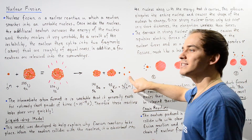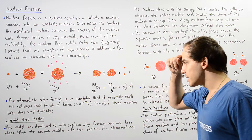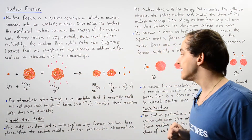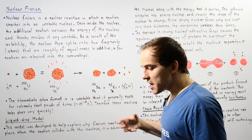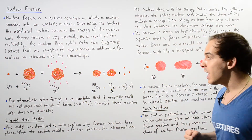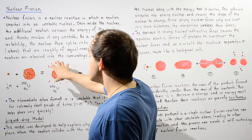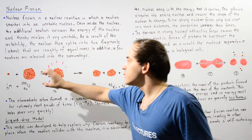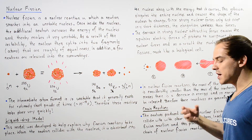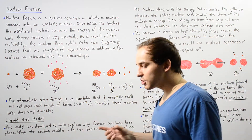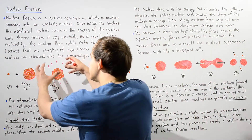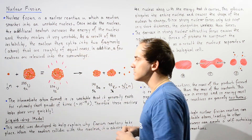The intermediate compound nucleus formed is so unstable and so high in energy that it generally exists for a very short period of time — about 10 to the negative 12 seconds. This implies that nuclear fission reactions take place very quickly.